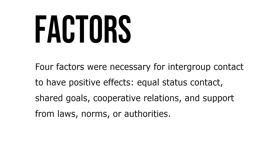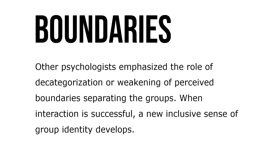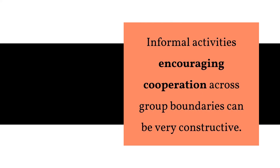Four factors were necessary for intergroup contact to have positive effects: equal status contact, shared goals, cooperative relations, and support from laws, norms, or authority. Other psychologists emphasize the role of decategorization — weakening of perceived boundaries separating groups. When interaction is successful, a new inclusive sense of group identity develops. Informal activities encouraging cooperation across group boundaries can be very constructive.